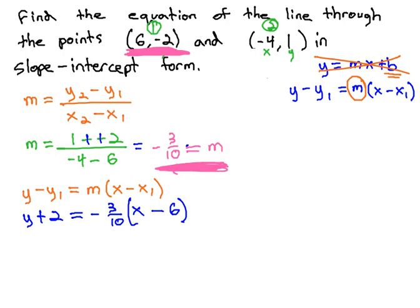We now have an equation of a line that goes through the two points we want. However, it is not in the correct form. Recall, to get in slope-intercept form, we need to clear the parentheses, then isolate the y. To clear the parentheses, we simply distribute through the parentheses. This gives us y plus 2 equals negative 3 tenths x, plus 9 fifths.